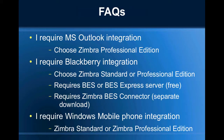Frequently asked questions: If you require Microsoft Outlook integration then select the Zimbra Professional Edition. If you require BlackBerry phone integration then you can choose the Zimbra Standard or Professional Edition, since both support mobile devices. This also requires the BlackBerry Enterprise Server or BlackBerry Enterprise Server Express, which is available for free to be downloaded and installed on your infrastructure. It also requires the BES connector, which is a separate download from Zimbra.com, to be installed on your BES server.